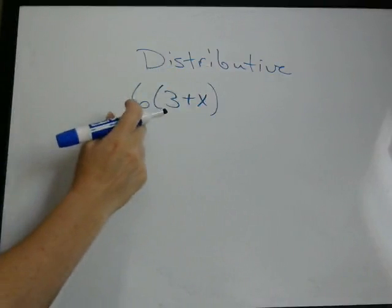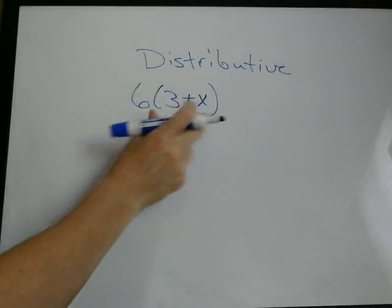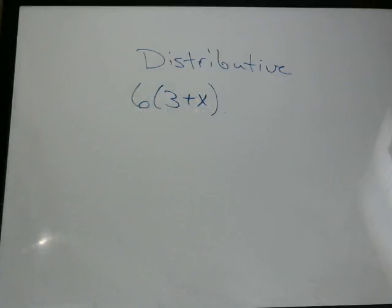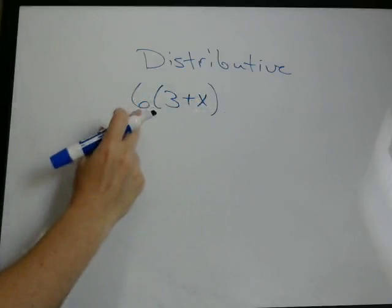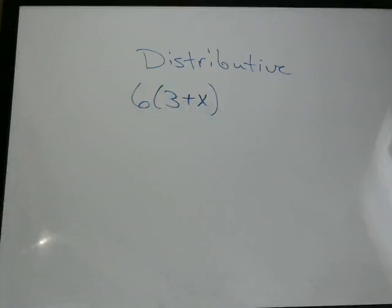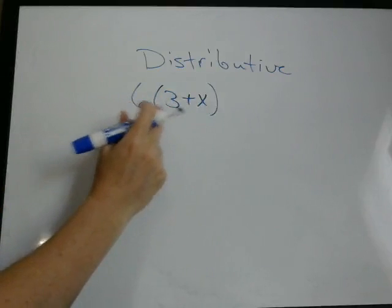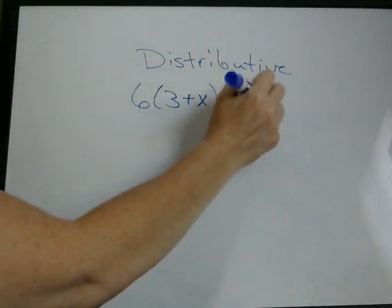Remember when you write 6 times something in parentheses, this is a multiplication. So 6 times 3 plus x. What we're going to do is distribute this 6 over the addition. So the first thing we're going to do is take the first factor inside the parentheses and multiply it by 6. So 6 times 3, which is 18.